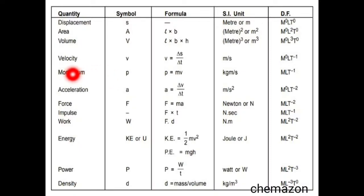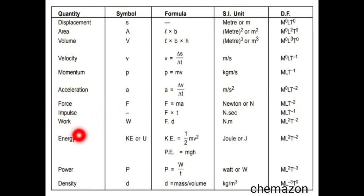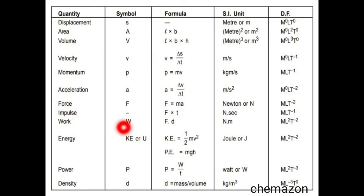Now let us understand some basic dimensions of physical quantities. Area is length into breadth and volume is length into breadth into height, giving dimensions L² and L³ respectively — that is meter square and meter cube. A very important unit in this table is work or energy. Work is force into displacement, and force is mass into acceleration. Acceleration is meter per second square. These units are important in chapters like chemical thermodynamics and kinetics.